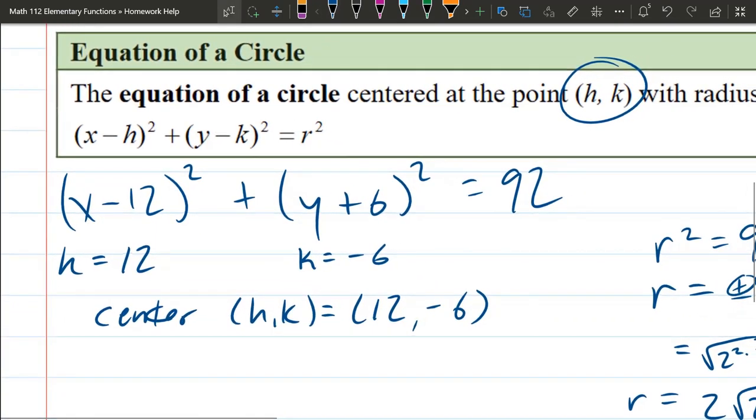So make sure you basically flip whatever sign that you see right here. It looks like the x-coordinate is negative 12, but the x-coordinate is actually positive 12. The y-coordinate of the center looks like it's positive 6, but it's actually negative 6. It's the opposite sign that it appears, so that can be a little bit tricky.